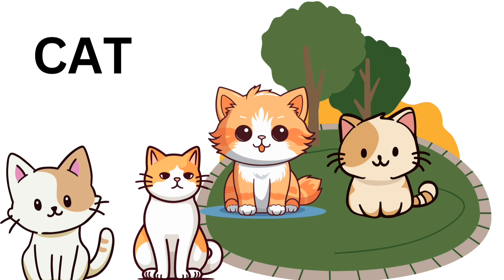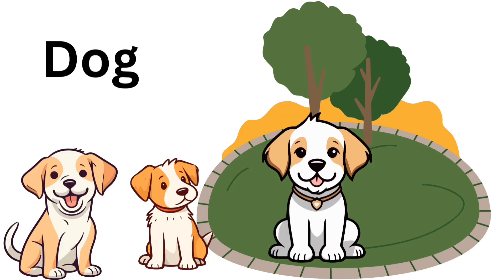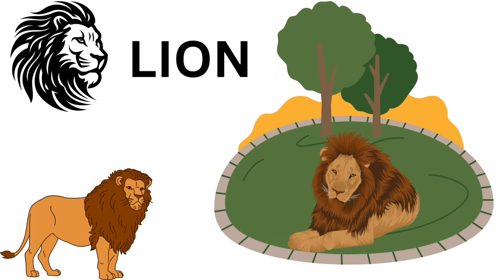The third animal is cat. C A T — cat. The fourth animal is dog. D O G — dog.